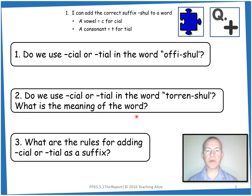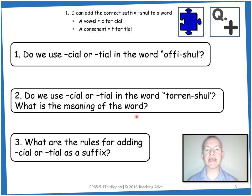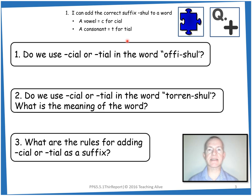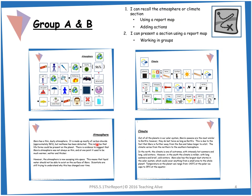And what is the meaning of the word torrential? You can use a dictionary to look this up if you haven't already. The meaning of torrential is heavy — as in torrential rain, heavy rain. Finally, number three: what are the rules for adding C-I-A-L or T-I-A-L as a suffix? We've covered these in our Steps to Success. As a starter, we'll recap the atmosphere and climate sections of our non-chronological report using our report maps. You can download these using the atmosphere and climate report map links in the activity section below.